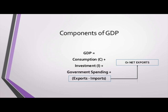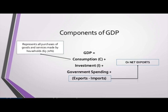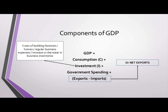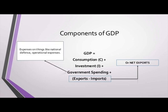Consumption represents all purchases of goods and services made by households, accounting for 65 to 70 percent. Investment includes building factories, homes, regular business expenses, and increase or decrease in business inventories. Government spending covers expenses on things like national defense and operational expenses.